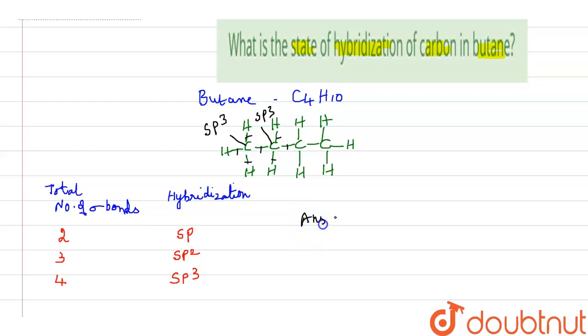So therefore, the answer is the hybridization of carbon in butane is sp3.